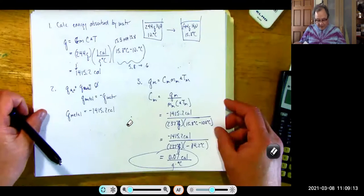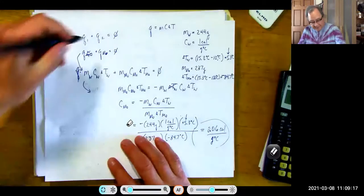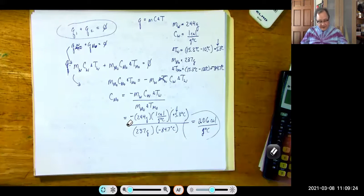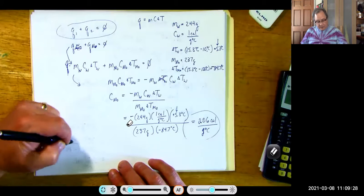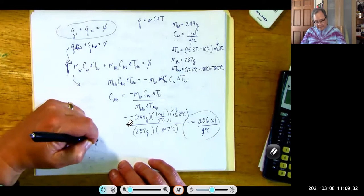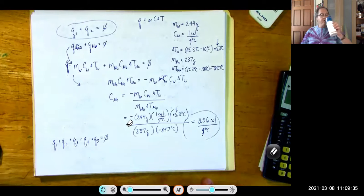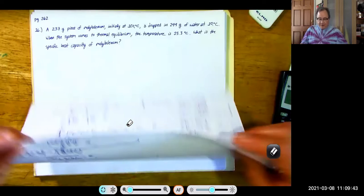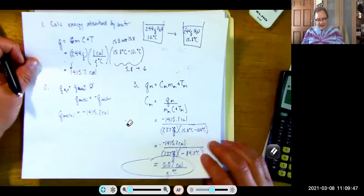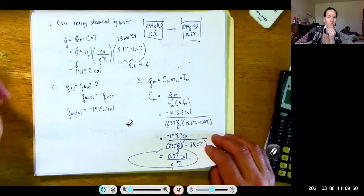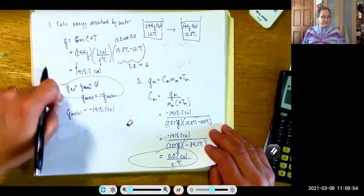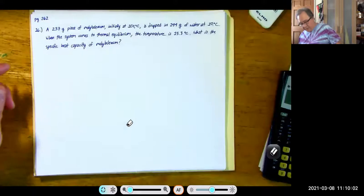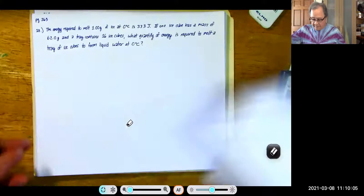I like this second approach better — starting directly with Q1 plus Q2 equals 0. The reason is that if you have five things that are touching, then you simply write Q1 plus Q2 plus Q3 plus Q4 plus Q5 equals 0. Whereas doing it step by step, you have all sorts of little things that you don't know how they connect yet.